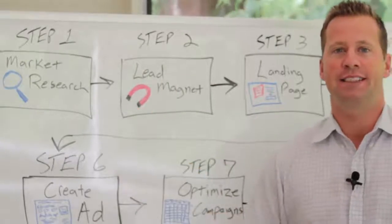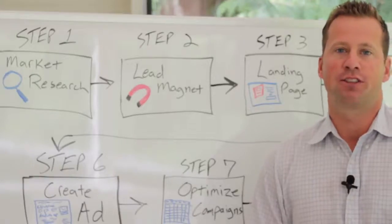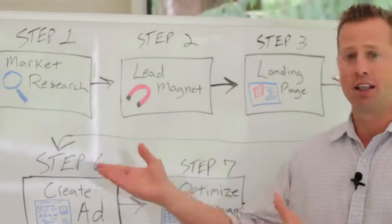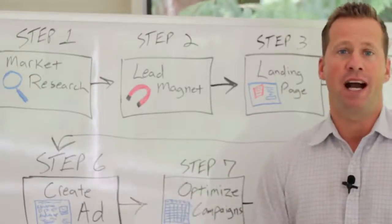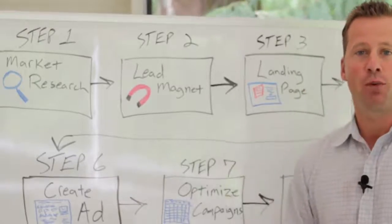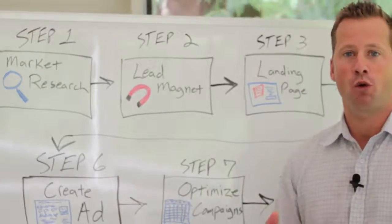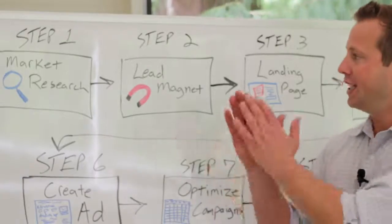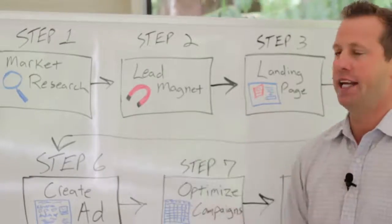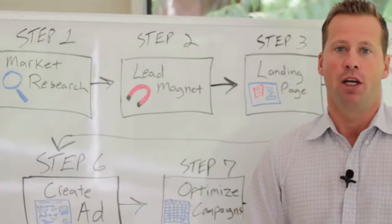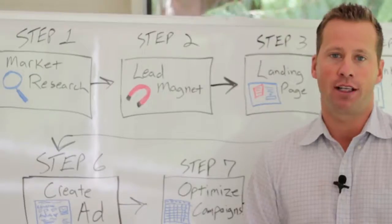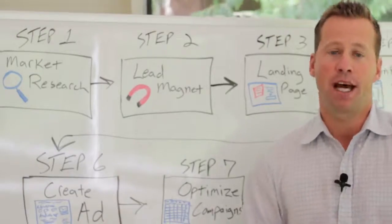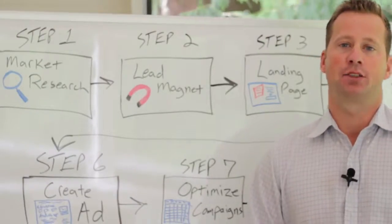Step one is the market research phase, or the competitor analysis phase, or what we like to call the spying phase. This is what you want to do before you set up your ads. Before you do anything else, you want to get in and learn as much as you can about your existing audience, your potential target audience, your competitors, all those types of things.